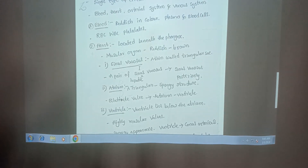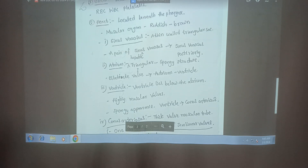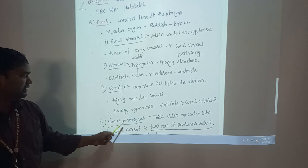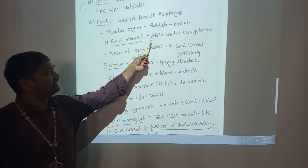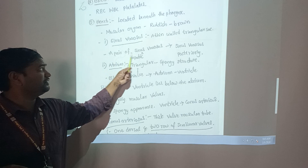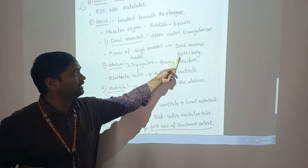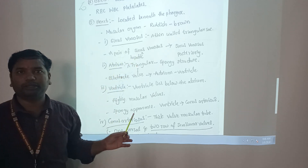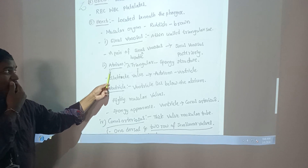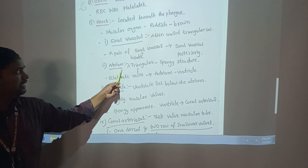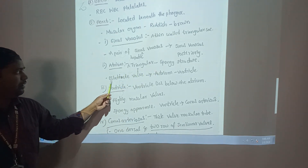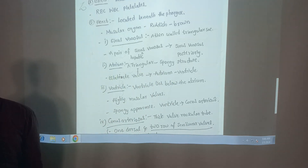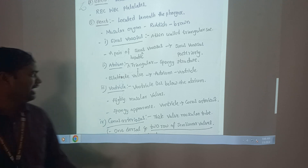The heart mainly has four parts: sinus venosus, atrium, ventricle, and conus arteriosus. The sinus venosus is a thin-walled, triangular sac. A pair of sinus venosus structures are present. Venous blood enters the sinus venosus through the posterior part, and a pair of hepatic sinuses also enter into the posterior part. The atrium is the upper chamber - a spongy structure - and the ventricle is the lower chamber.